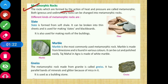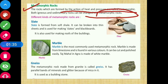The rocks which are formed by the action of heat and pressure are called metamorphic rocks. Both igneous and sedimentary rocks can be changed into metamorphic rocks. Igneous rocks are formed when lava cools and hardens — a natural process. Sedimentary rocks form natural layers. When we apply heat and pressure to either type, they are converted into metamorphic rocks.